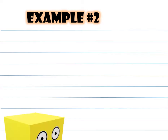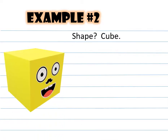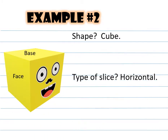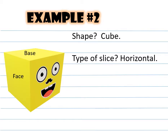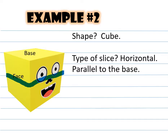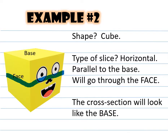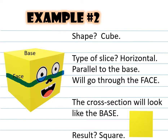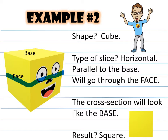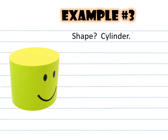Example number two: the shape is also a cube. The type of cut this time is a horizontal cut going across — it is parallel to the base and will go through the face. The cross section will look like the base. The result is a square.